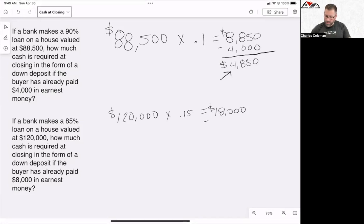Well, they already dropped off a check for $8,000. Remember that earnest money does go towards the purchase price of the home. So we're going to take $18,000, subtract that from $8,000, and that means that the buyer has to bring a check to the closing table for $10,000. So this is how you lay those questions up.